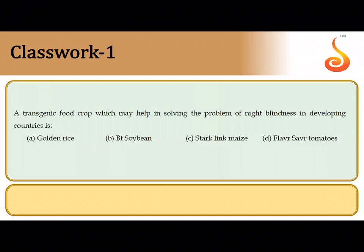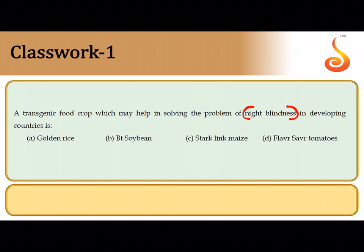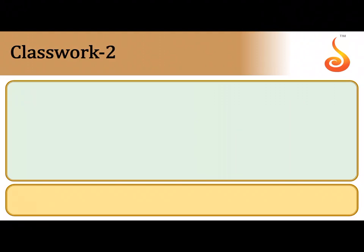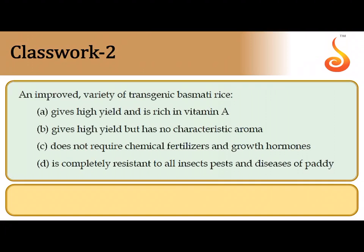The first question says: a transgenic food crop which may help in solving the problem of night blindness. Since night blindness means the food must be fortified with vitamin A, and as we all know, golden rice is nothing but vitamin A fortified rice. So the correct answer is option A.